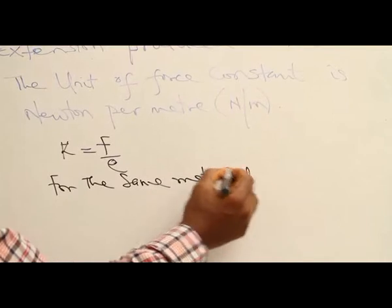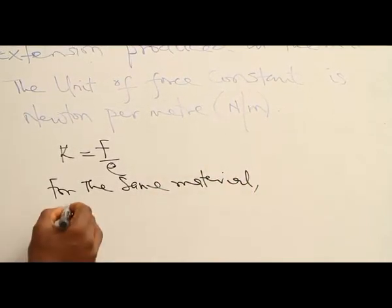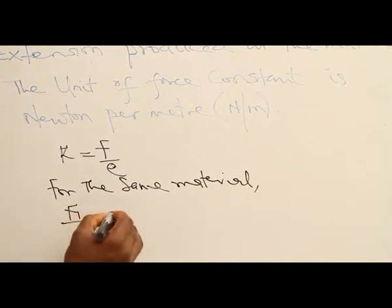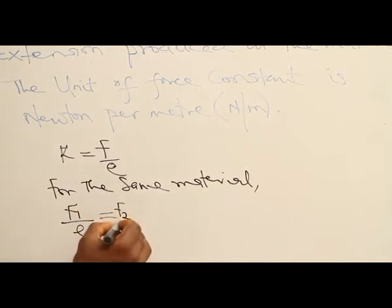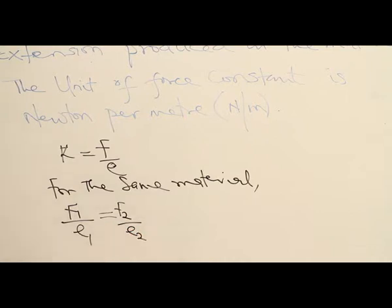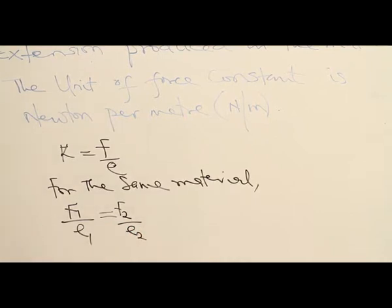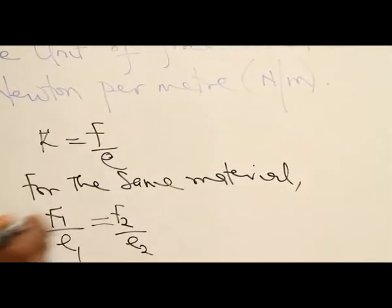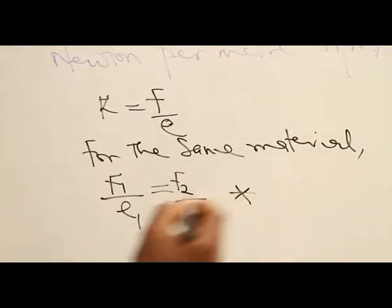If a force F1 produces an extension e1, a force F2 will produce an extension e2. The ratio of the force in each case to the extension produced must be constant.